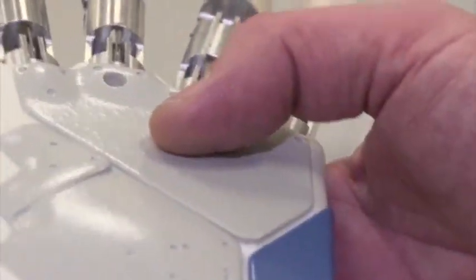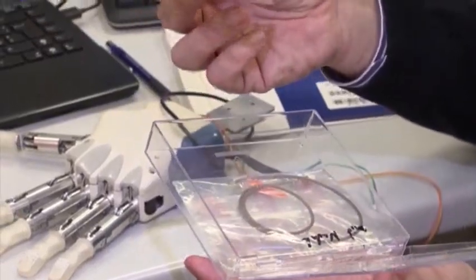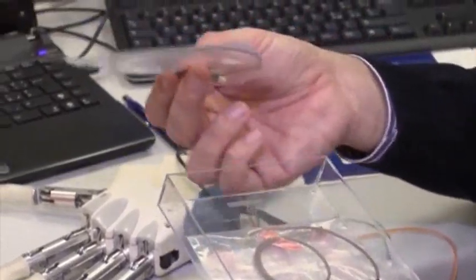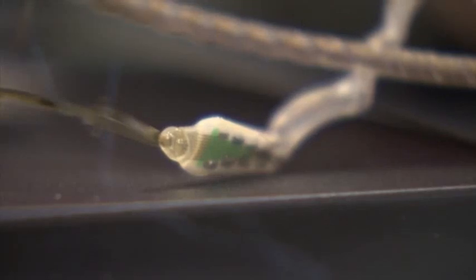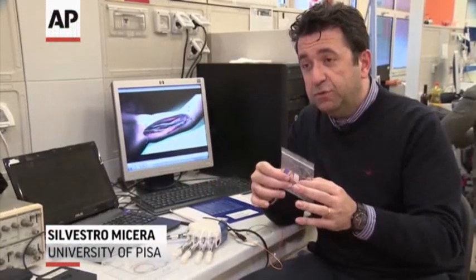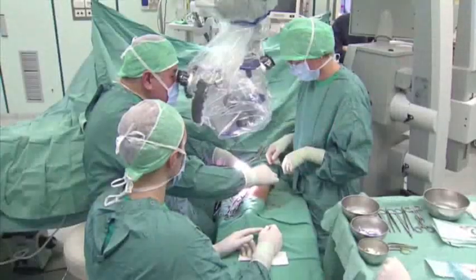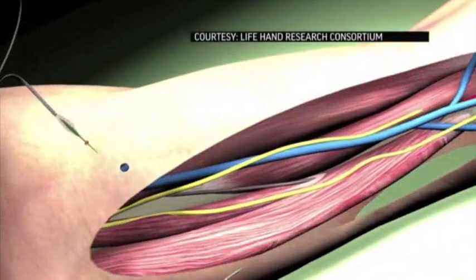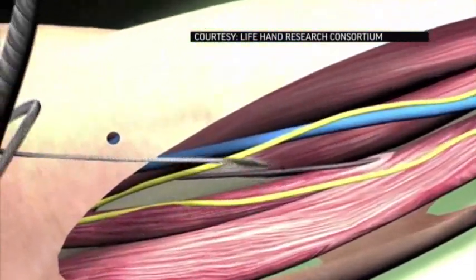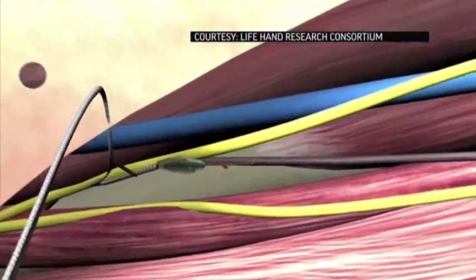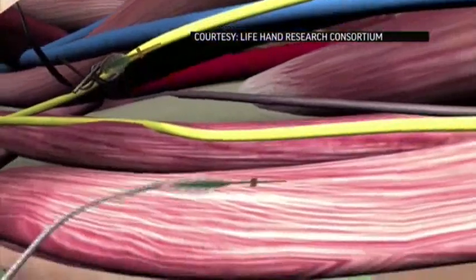Researchers at Gemelli Hospital in Rome are developing the technology, an electrical link between the prosthetic and the brain that gives the user a sense of touch. First, the electrodes will be implanted long term. The hand works by running wiring that would have been connected to the nerves in the hand to sensors in the fingers of the prosthetic. Similar research is also being done at universities in the U.S.